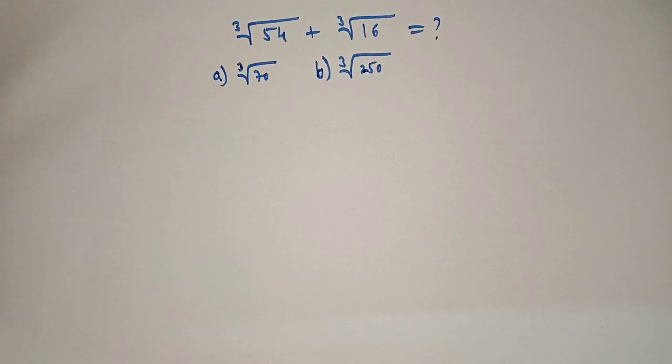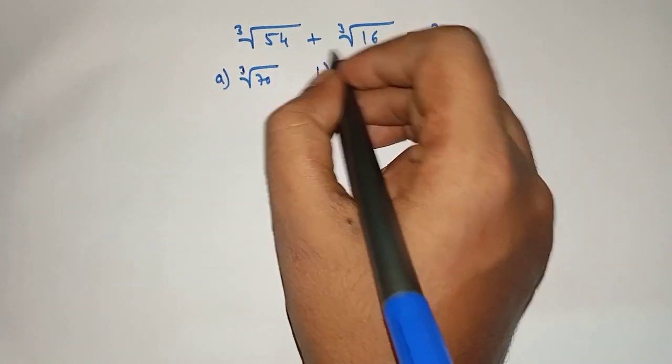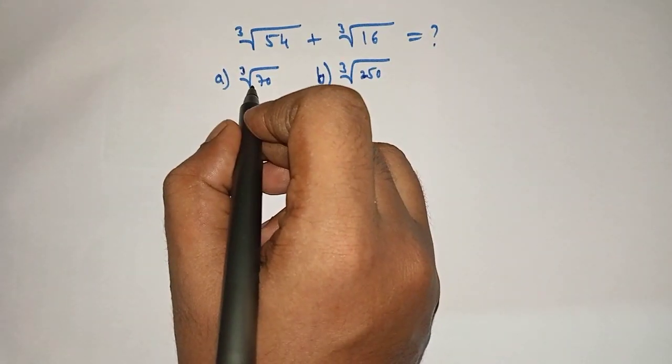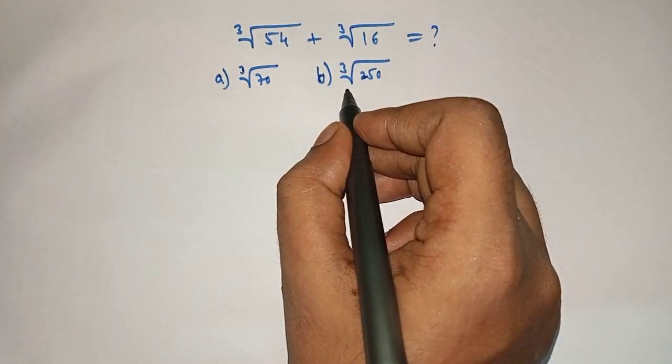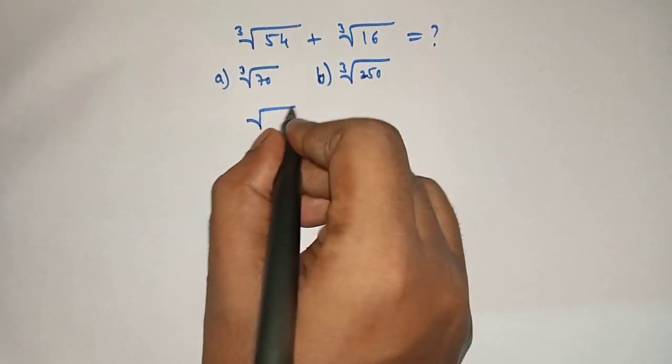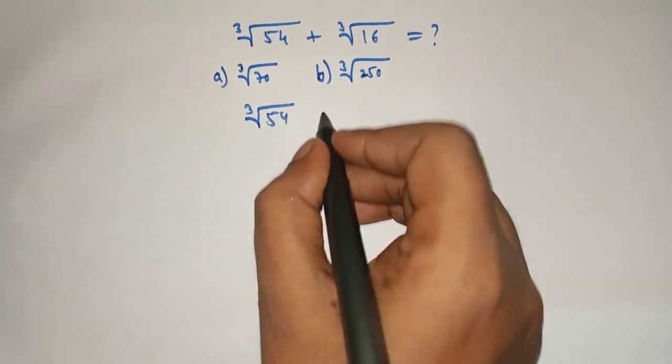Hello friends, welcome to Aha Math. Cube root of 54 plus cube root of 16 is equal to what? Option A: cube root of 70, or option B: cube root of 250. So let's solve cube root of 54 plus cube root of 16.